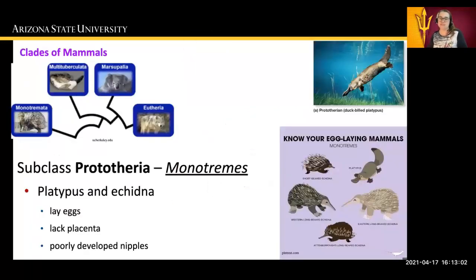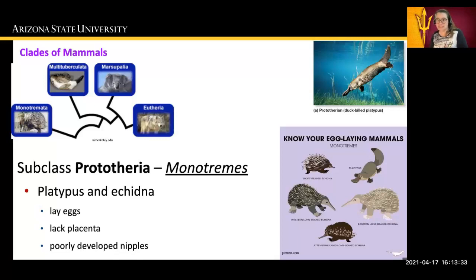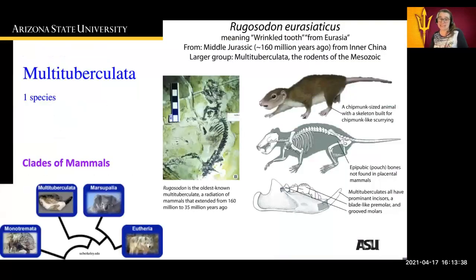There are several clades of mammals. The subclass prototheria consists of the monotremes. The monotremes are the platypus and echidna. These are egg-laying, non-placental organisms. They have poorly developed nipples. However, they are mammals and exhibit all other characteristics of amniotes.